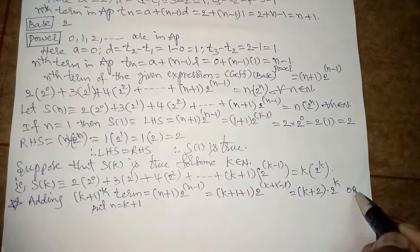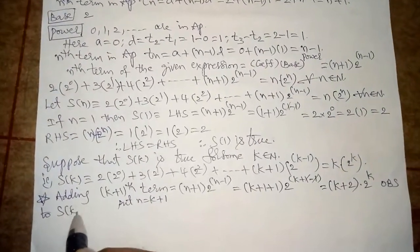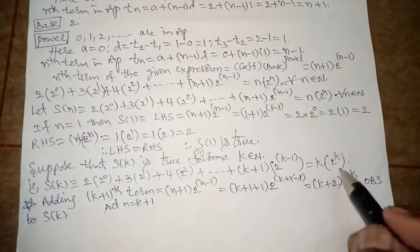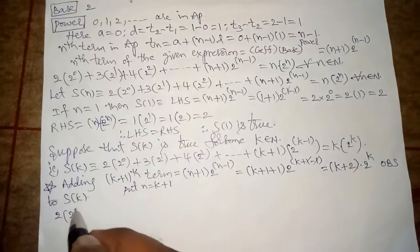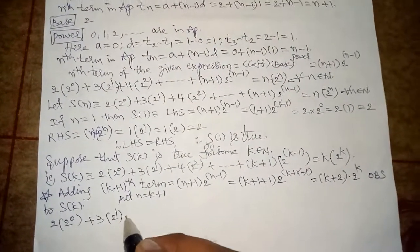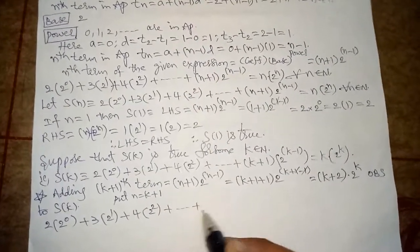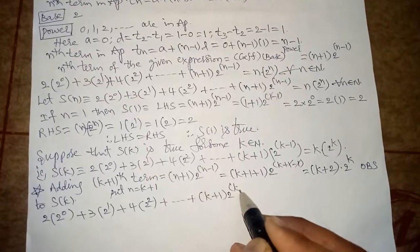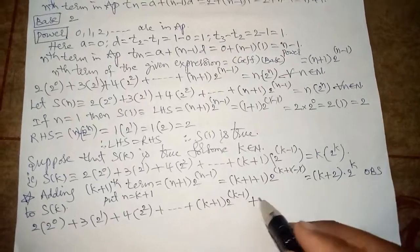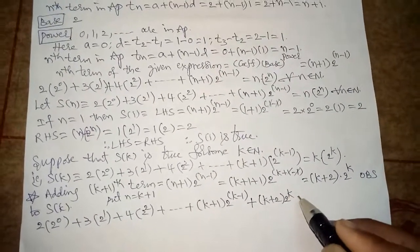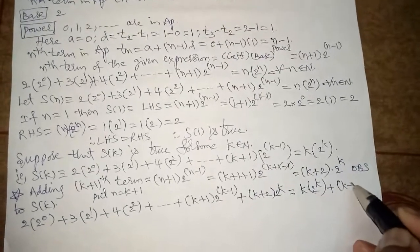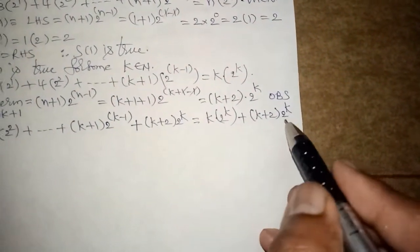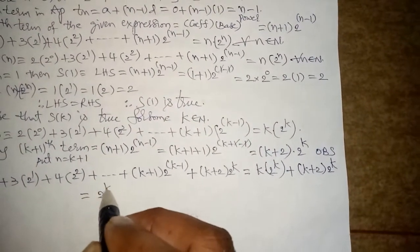For S(k plus 1), add (k plus 2) into 2 power k on both sides of S(k). We get 2 into 2 power 0 plus 3 into 2 power 1 plus 4 into 2 power 2 plus and so on plus (k plus 1) into 2 power (k minus 1) plus (k plus 2) into 2 power k, equals k into 2 power k plus (k plus 2) into 2 power k. On the RHS, 2 power k is a common factor, remaining: k plus k plus 2.